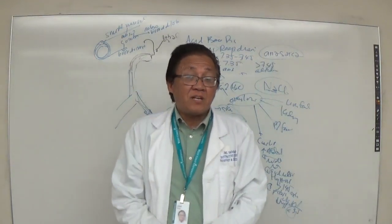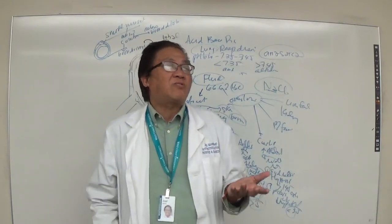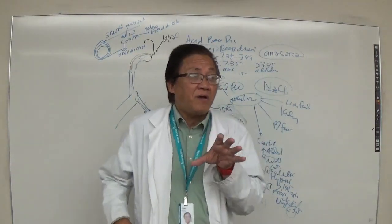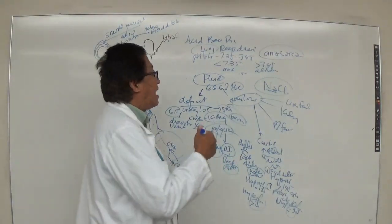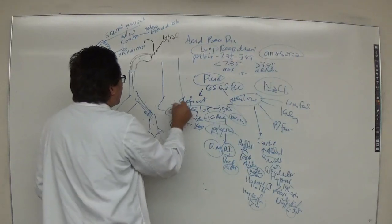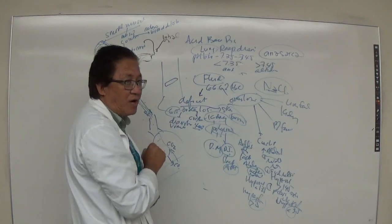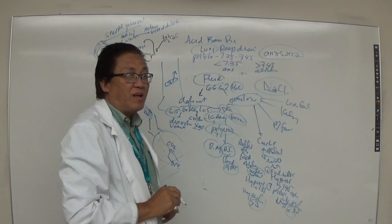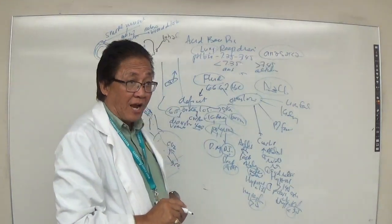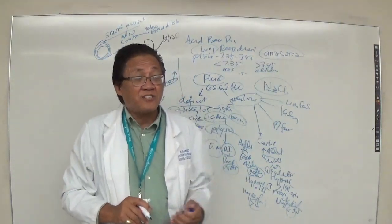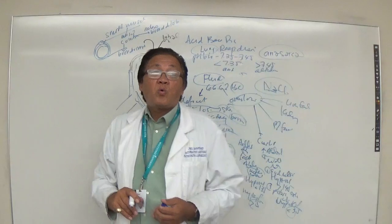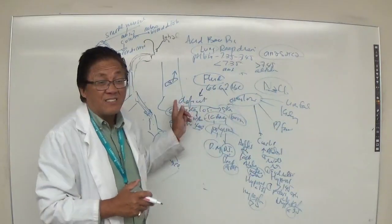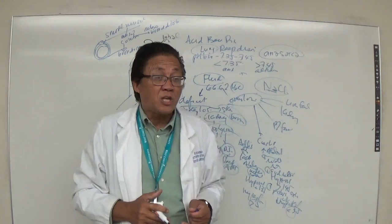A positive Trousseau sign is carpopedal spasm — the wrist and fingers flex into a characteristic position. Both Chvostek and Trousseau signs indicate hypocalcemia. Calcitonin — from the thyroid gland — promotes calcium movement from the blood into the bone, lowering blood calcium levels and strengthening bone. A synthetic nasal spray form of calcitonin was used for patients with osteoporosis.